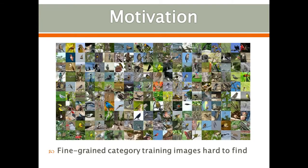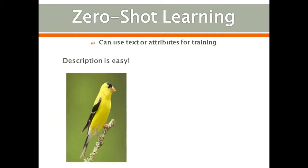It is hard to find training images for fine-grained categories. For some visual concepts, such as American Goldfinch, a supervisor can provide an attribute or text-based description, such as it has a yellow body and black wings, to train a model without requiring training images. This is called zero-shot learning.